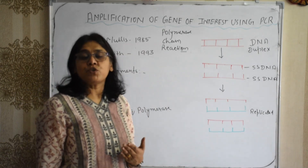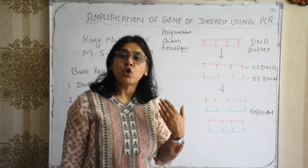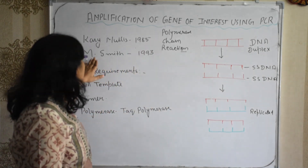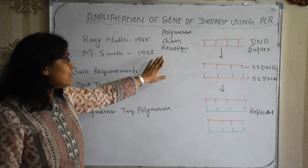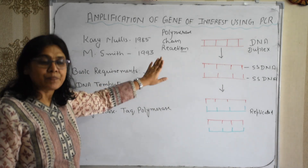For his contribution, Kary Mullis was awarded the Nobel Prize in Chemistry along with Michael Smith in 1993.